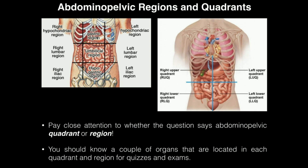The abdominal pelvic regions are more difficult because there are nine of them. On the left side, going from top to bottom: left hypochondriac region, left lumbar region, and left iliac region. We have the same on the right side: right hypochondriac, right lumbar, and right iliac region.